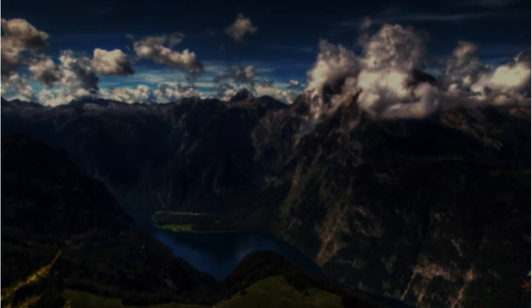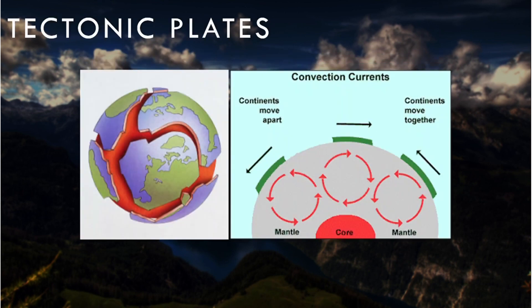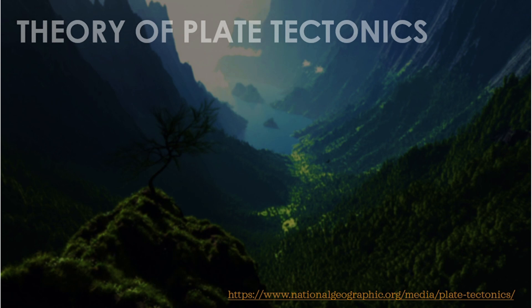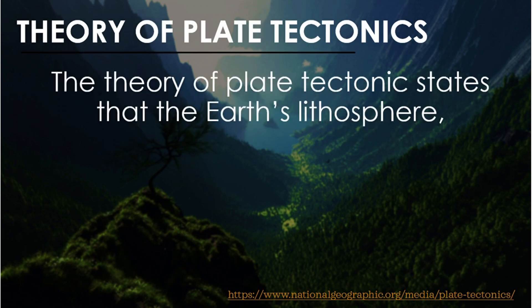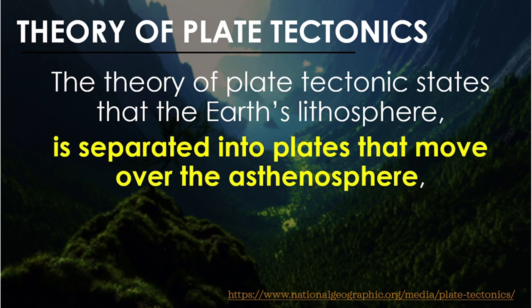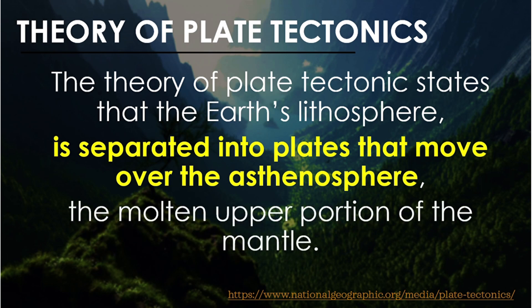The lithosphere is divided into separate plates called tectonic plates, or lithospheric plates, which move very slowly in response to the convecting part of the mantle. This is in conjunction with the theory of plate tectonics, which states that the Earth's lithosphere is separated into plates that move over the asthenosphere, the molten upper portion of the mantle.